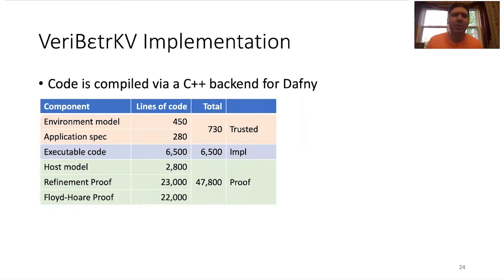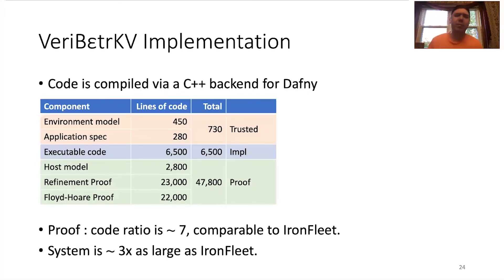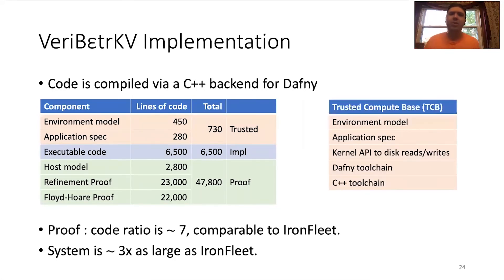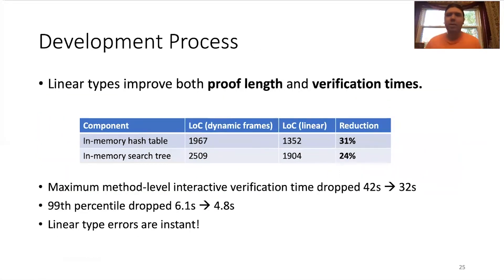Now, I'll tell you a bit about the artifact itself. VeriBetrKV comprises about 50,000 lines of Dafny code. It's compiled via a C++ backend that we added. Its proof-to-code ratio is about seven, which is comparable to our predecessor, IronFleet, although the system is about three times as large. And so, this shows that the methods do scale. The TCB in total consists of the environment model that I told you about earlier and also the application spec, but also the kernel's API to access the disk, the Dafny verification tool chain, and of course, the C++ compilation tool chain.